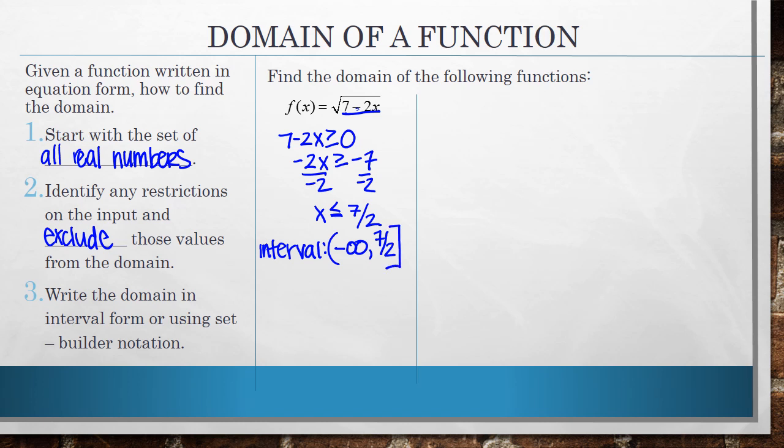I do have a link to a video that reviews interval notation at the end of this video. So if you are needing to review that from previous classes, use that link. Now, if I were to write this in set builder notation, this would be the set of all x values such that x is less than or equal to 7 halves. All right, next example.